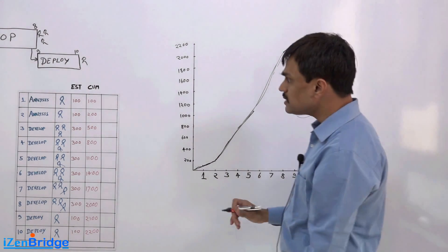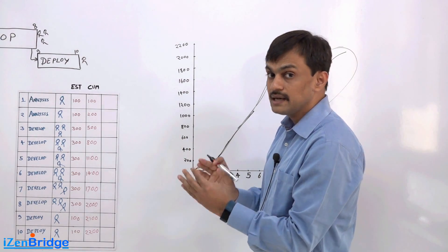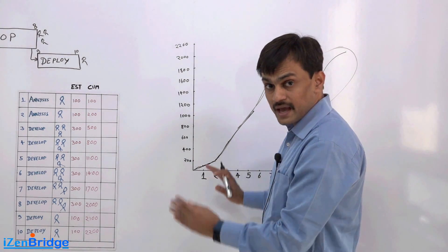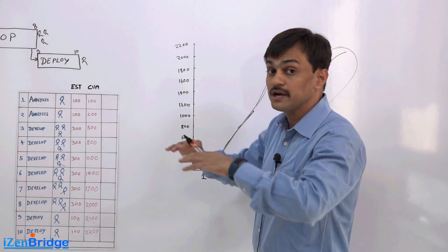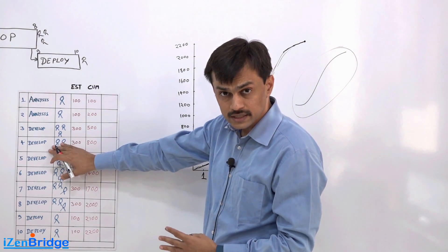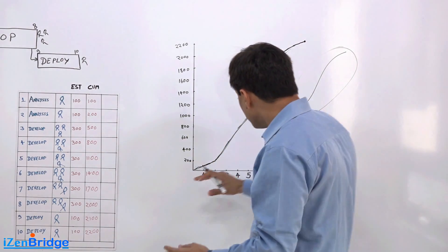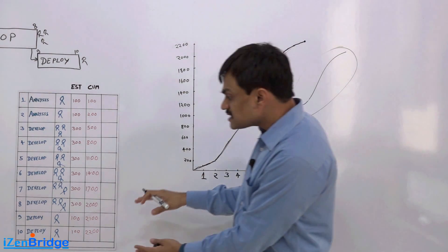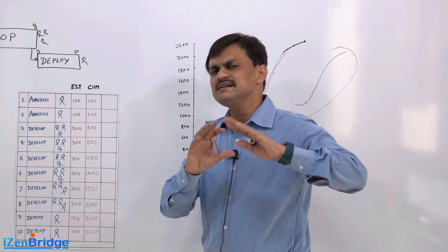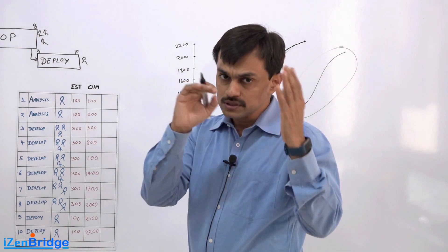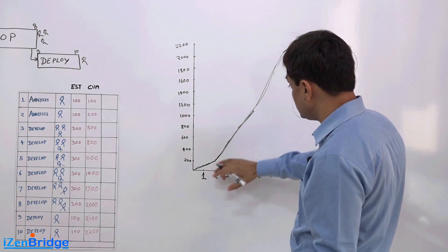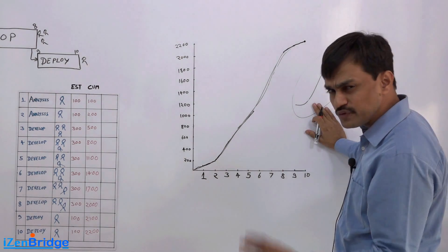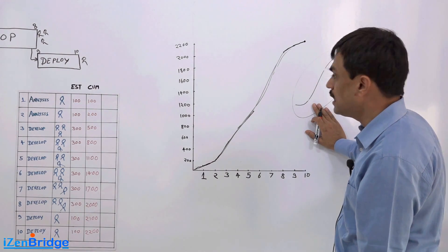The idea here is initially we might be involving less number of people and that is why in the initial duration of a project we may spend less money. As we get into execution we are expected to spend lots of money because more and more people start working on it and they are spending $300 every day. Our curve goes steep in between but as we reach towards the end again it is expected to have less number of people working on it because it is just deployment. The main work is already done and the curve goes down and that is the kind of mark we see in our S curve. This is how our cost estimations are going against the time.